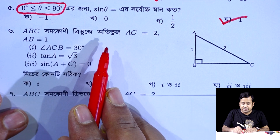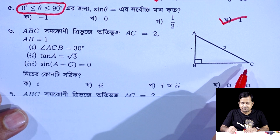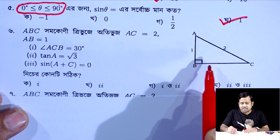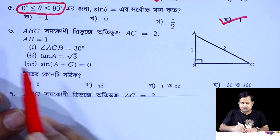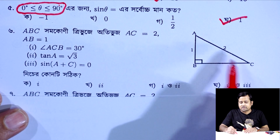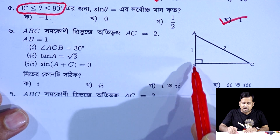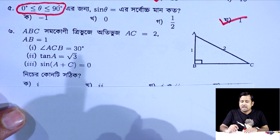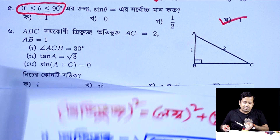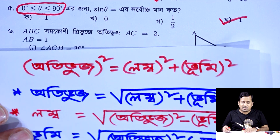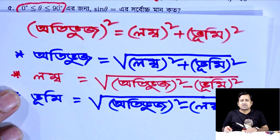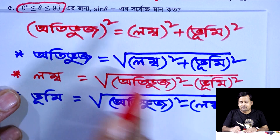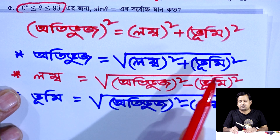Now, consider triangle ABC which is a right-angle triangle. B equals 1, and angle B equals 90 degrees. We need to find BC. The hypotenuse AC equals the square root of (perpendicular squared plus base squared), which is the Pythagoras theorem: AC equals root of (lombo squared plus bhoomi squared).